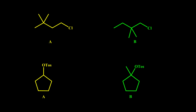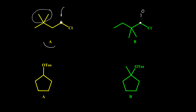Here is the last example for the first part of this video. For compound A, we have a primary alkyl halide, and for compound B we also have a primary alkyl halide, but in compound A the bulky group is far from the C–Cl bond, so the nucleophile can add to this carbon more easily from the backside. Compared to compound B, which is also primary, but these bulky groups are closer to the reaction site, so addition of the nucleophile from the backside is harder due to the steric effect of these two methyl groups, so A has a faster rate for SN2 reaction.